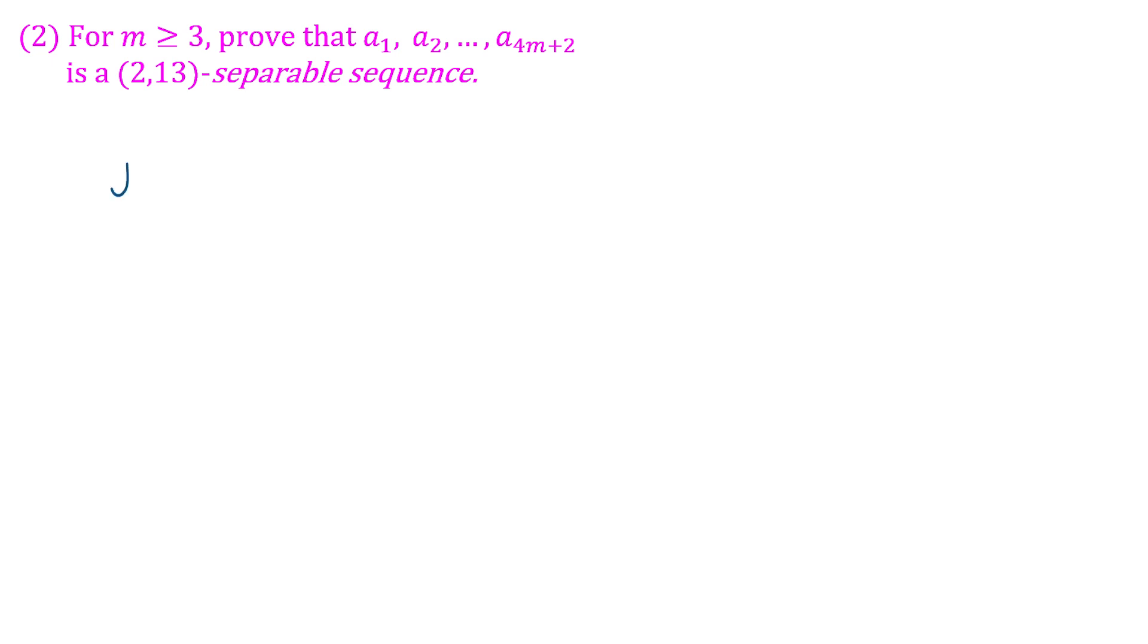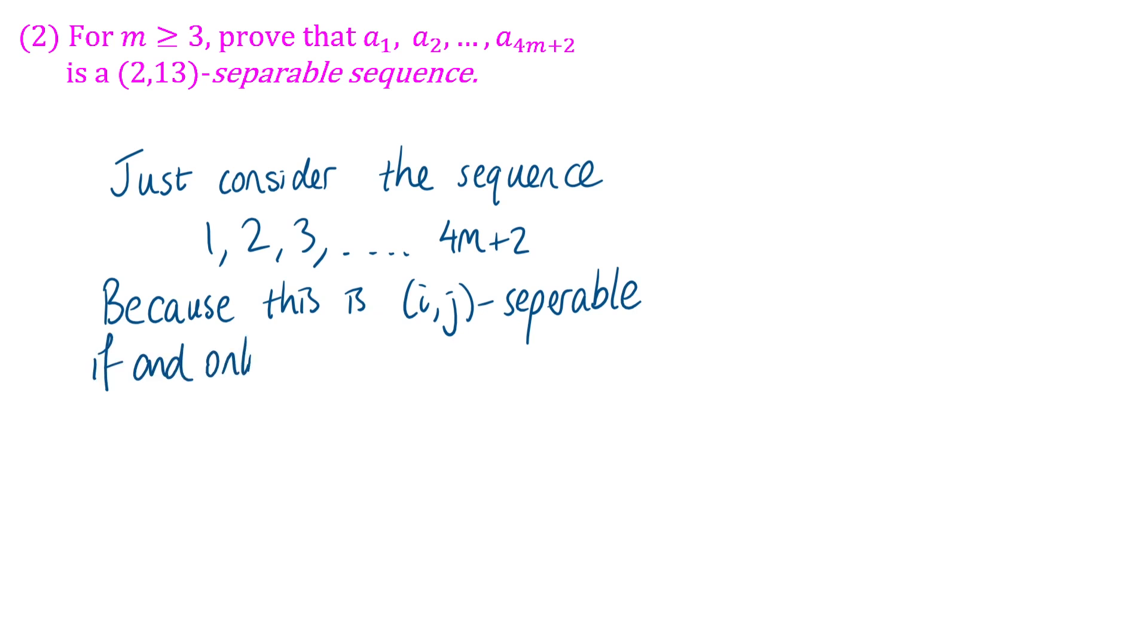Before diving into this proof, it's probably useful to notice that we can simplify this problem by just considering the sequence of natural numbers 1, 2, 3, etc. If this sequence is (i,j)-separable, then any sequence a₁, a₂, etc. will be (i,j)-separable. You could just apply a scale factor to your sequence to make the common difference one, maybe add or subtract a constant, and all the differences will be affected equally. So they'll either both be (i,j)-separable or neither will be.